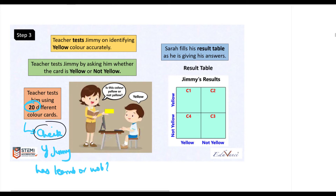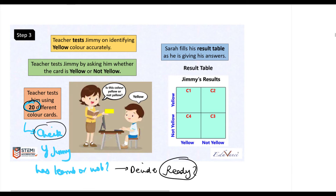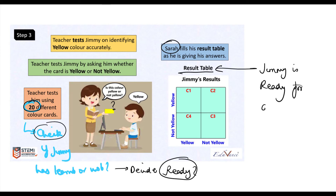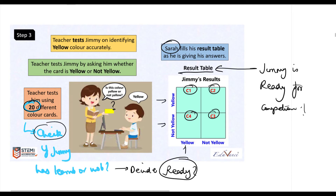Testing is very important — how will you decide if Jimmy is ready for the competition if you can't check whether he's learning? So she uses these 20 cards to ask Jimmy: is this yellow or is this not yellow? The teacher asks Sara, Jimmy's friend, to fill something called a result table, and this result table will help us decide whether Jimmy is ready for the competition.